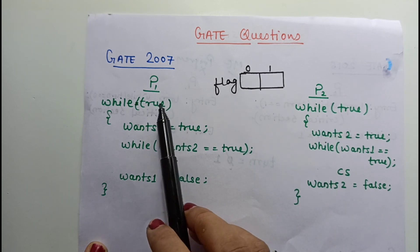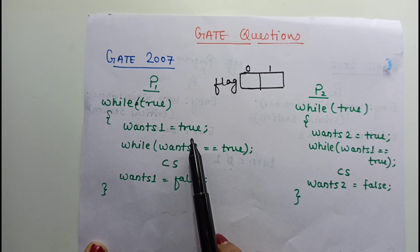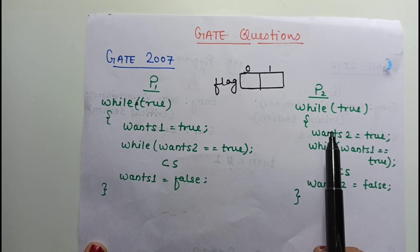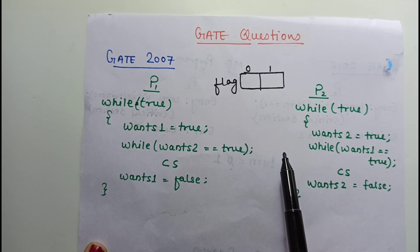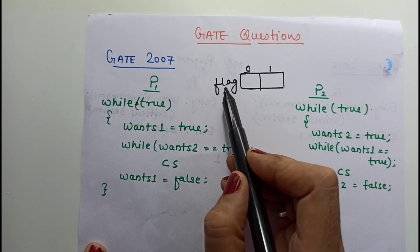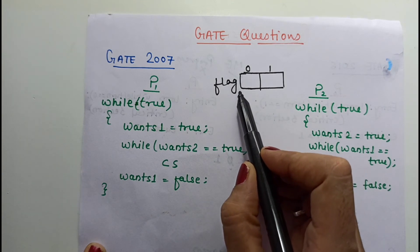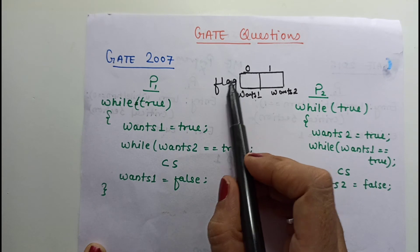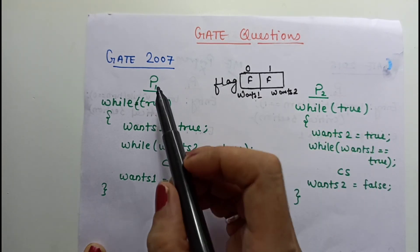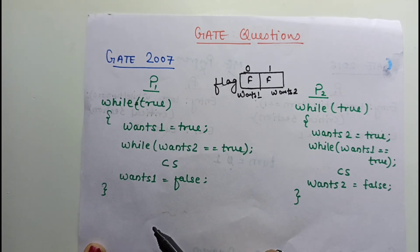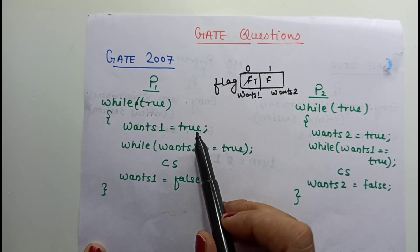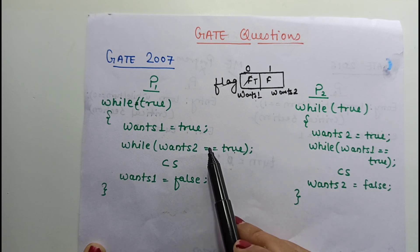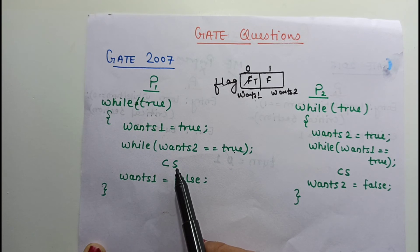There are two processes. While true, the variable wants1 is first set to true. Then in the while loop, the entry condition checks: while wants2 equals true, wait. Wants1 is the flag for P1, wants2 is the flag for P2, initially both are false. For mutual exclusion: process P1 sets wants1 to true, then checks wants2 — it is false — so P1 goes into the critical section.